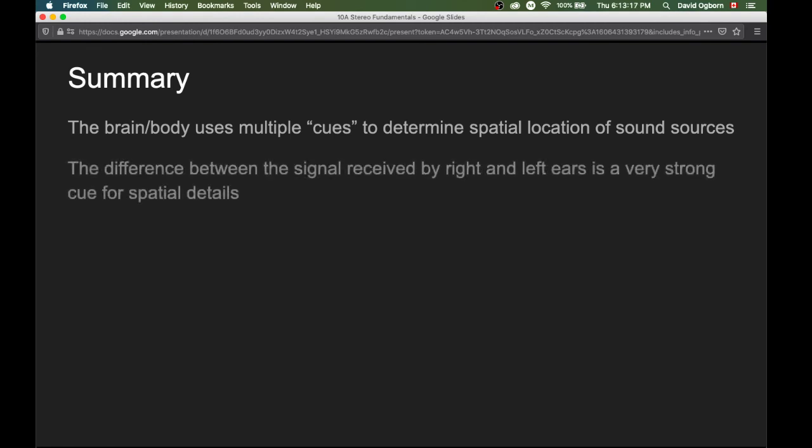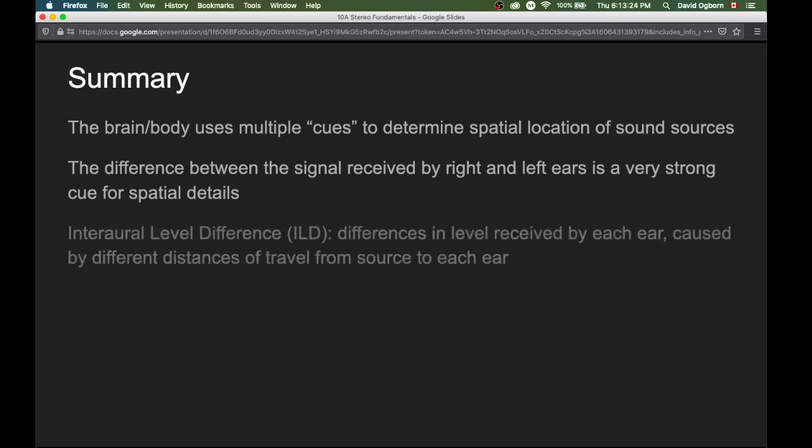As a summary of this first module, we saw that the brain and the body uses multiple cues to determine the spatial location of sound sources. And we saw that the difference between the signal received by the right and the left ears is a very strong cue for spatial details.